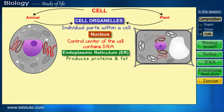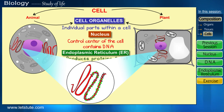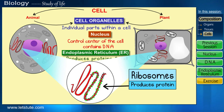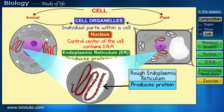If you observe this large network under a microscope, you will see that some part of it has particles or grains attached to it. Just as we get our proteins from the food we eat, cells get their proteins because of these particles, which are called ribosomes. Because of the ribosomes, that part of the network appears rough, and so it is called the rough endoplasmic reticulum.